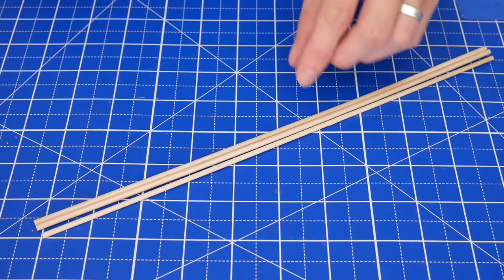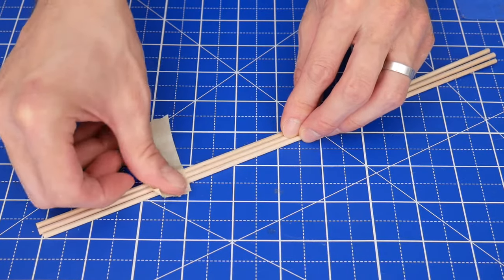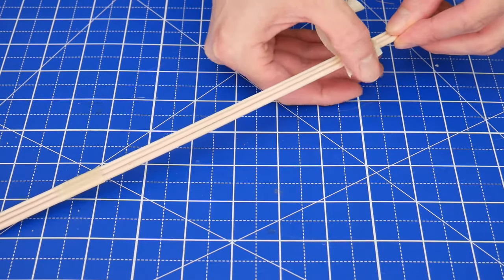Next, make the catapult arm by laying three 12-inch skewers flat like this and wrapping a piece of tape around them here and on the other end.